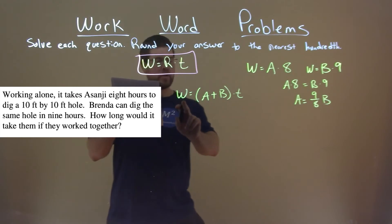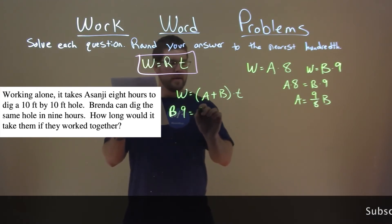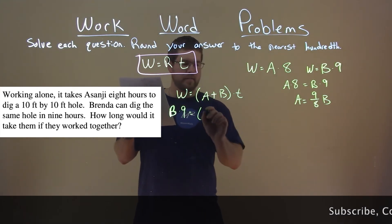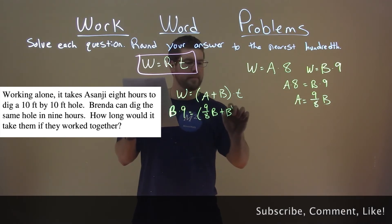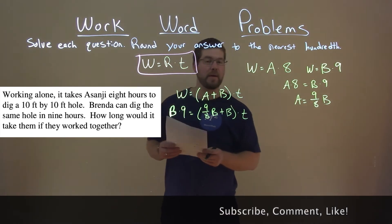Well, we know W equals 9B. That's a weird looking B. There we go, a little better. And A equals nine-eighths B. We add B here and multiply it by T. Okay?